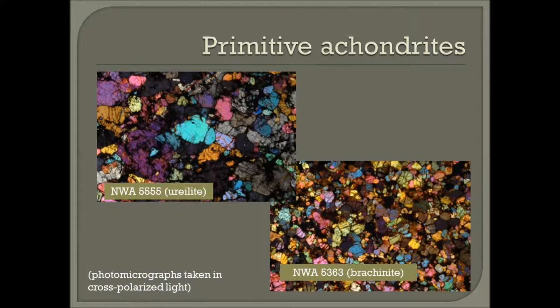Primitive achondrites do not contain chondrules but are thought to be closer to their chondritic parent than achondrites. They are considered transitional meteorites in the sense that they share characteristics with both chondrites and achondrites. Primitive achondrites are segregated into two clans and seven groups. Mineral textures suggest these meteorites experienced partial melting but did not crystallize from a melt; however, whole rock chemical or oxygen isotopic composition indicates a close affinity to the chondrites from which they formed.